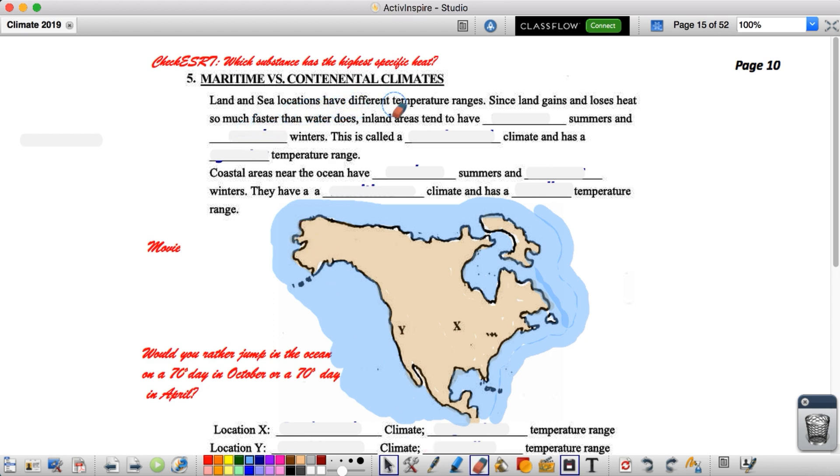It reads as follows: Land and sea locations have different temperature ranges. Since land gains and loses heat so much faster than water does, inland areas tend to have warmer summers and cooler winters. We're going to call that a continental climate, and that means it has a greater temperature range. The temperature bounces around more in there.